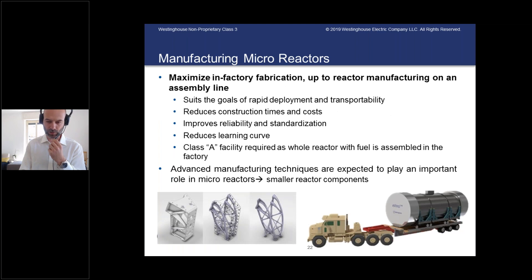Another important area for microreactors is manufacturing. It is usually targeted to make these reactors on a factory line — maximize in-factory fabrication. The more fabrication occurs in the factory, the easier it is to deploy and transport the reactor rapidly. Construction times on site are minimized, along with related costs. By controlling the manufacturing process more accurately in a factory, reliability improves and standardization is easier to achieve. There is a shorter learning curve and quicker turnaround of components, and it is more practical to incorporate lessons learned.